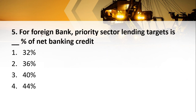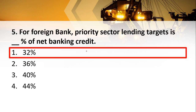For foreign banks, priority sector lending is targeted at a certain percentage of net banking credit. The answer is 32 percent for foreign banks.